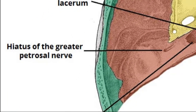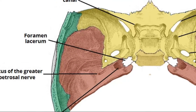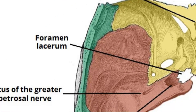Finally, H is for the hiatus of the greater petrosal nerve, through which the greater petrosal nerve passes. There is also foramen lacerum, which is not a true foramen because it's not within a bone — it's a gap between two bones. It's important because through it pass emissary veins, small meningeal branches, and the greater petrosal nerve, which enters from the posterior aspect and later joins the deep petrosal nerve.